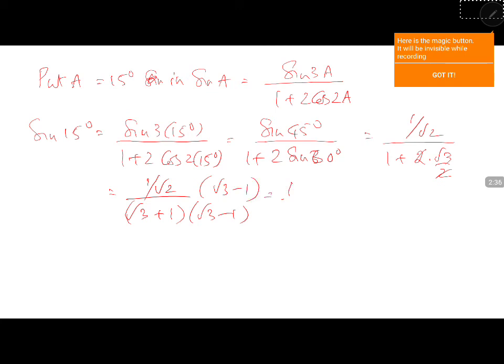Bringing root 2 to the denominator and using (A + B)(A - B) equals A² minus B², the denominator becomes 3 minus 1 equals 2. So this becomes (root 3 minus 1) by (2 root 2). That is how you prove it.